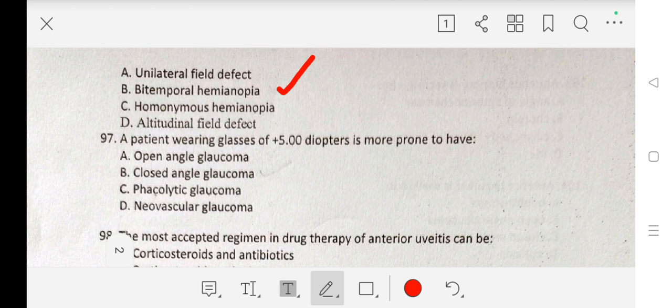Question number 97 is: A patient wearing glasses of plus 5 diopter is more prone to have A. open angle glaucoma, B. closed angle glaucoma, C. phacolytic glaucoma, D. neovascular glaucoma. Our correct answer is B. closed angle glaucoma.